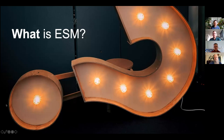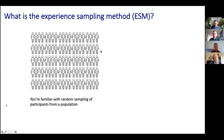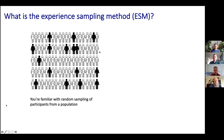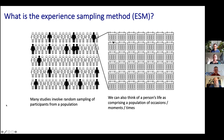So first of all, what is the experience sampling method, or ESM? You're probably familiar with random sampling of participants from a population — where you pick randomly some members of a population to form a sample and draw inferences about the population as a whole. Experience sampling takes the same logic and applies it to time points, occasions, or situations — getting a random sampling of those time points from a person's life.